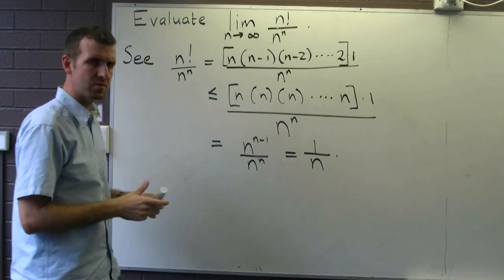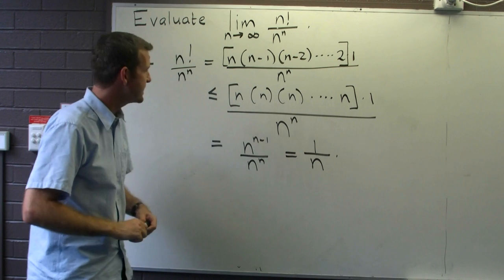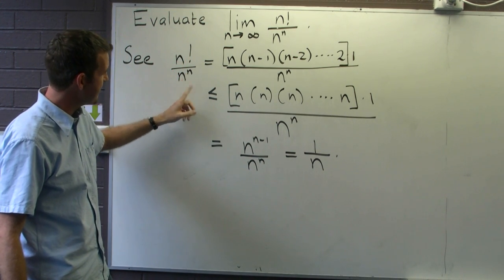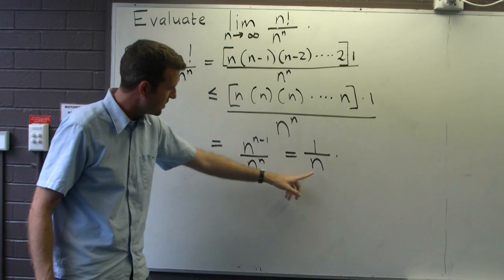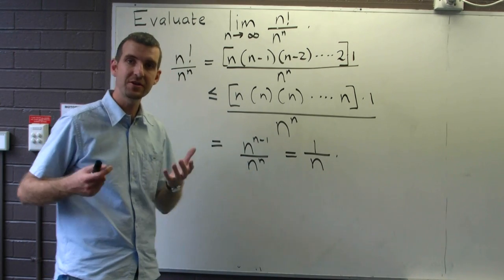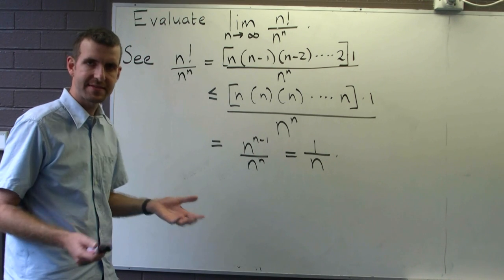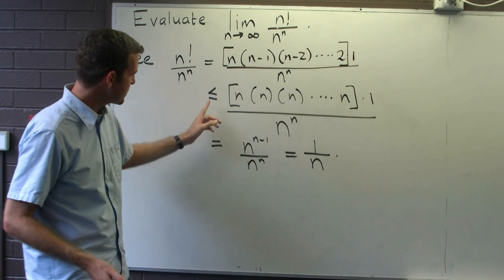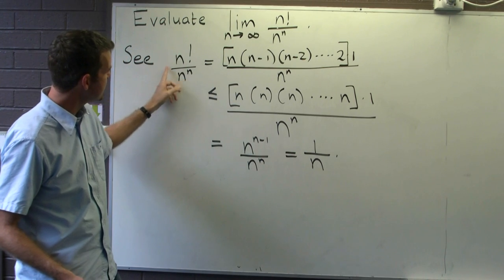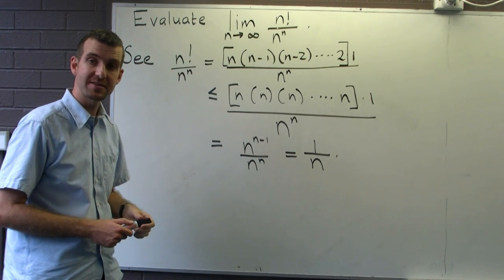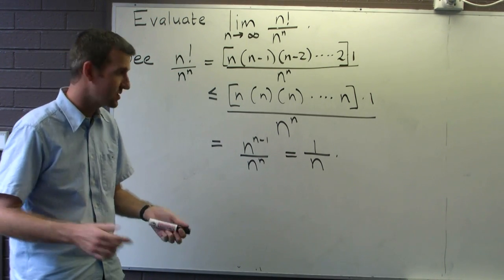Okay, so how does that help us? Well, we know that n factorial over n to the n is less than or equal to 1 over n for every natural number n. Well, how does that help us? We've got an inequality and we know that our sequence, each term in our sequence, is greater than or equal to 0.